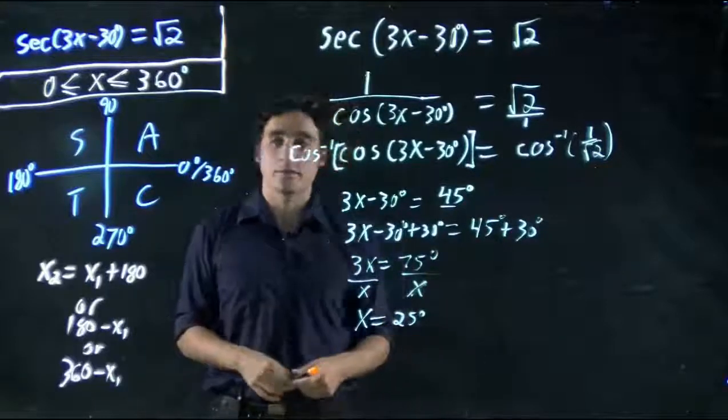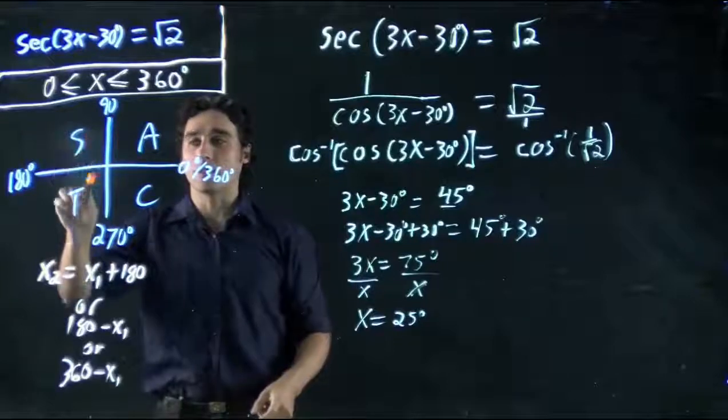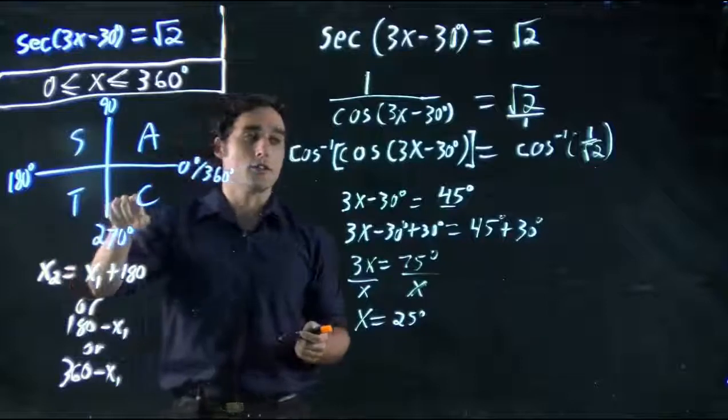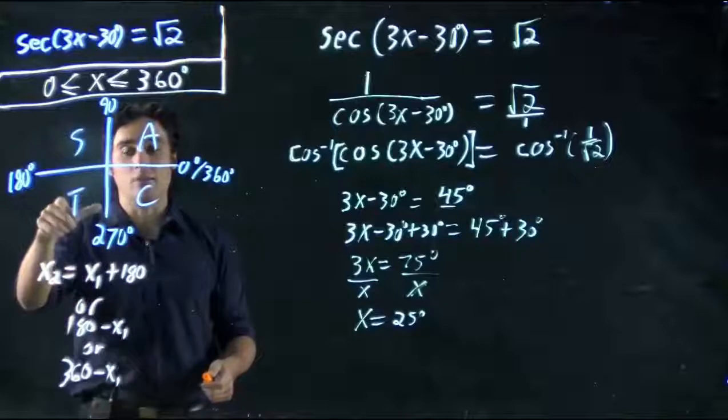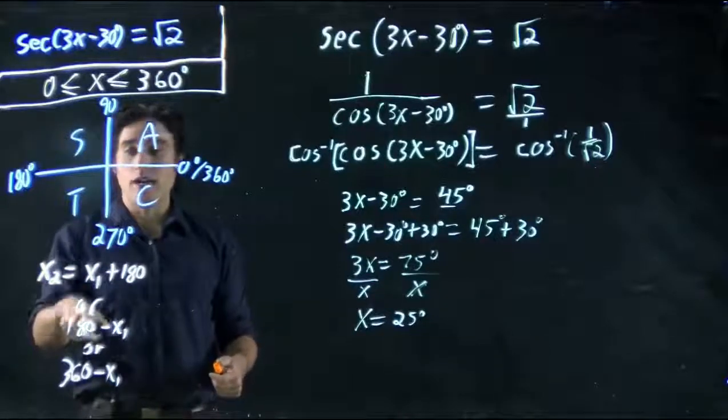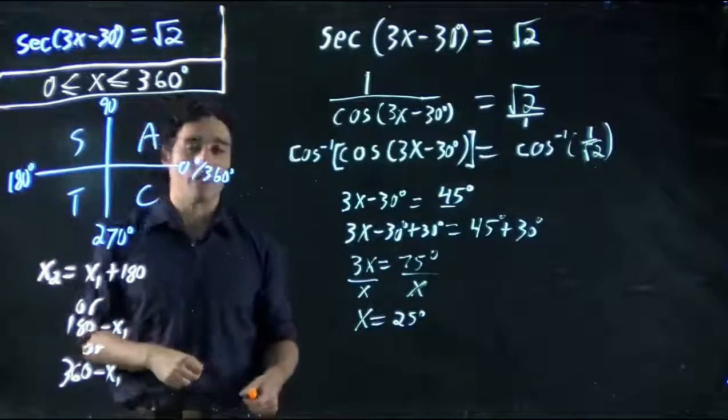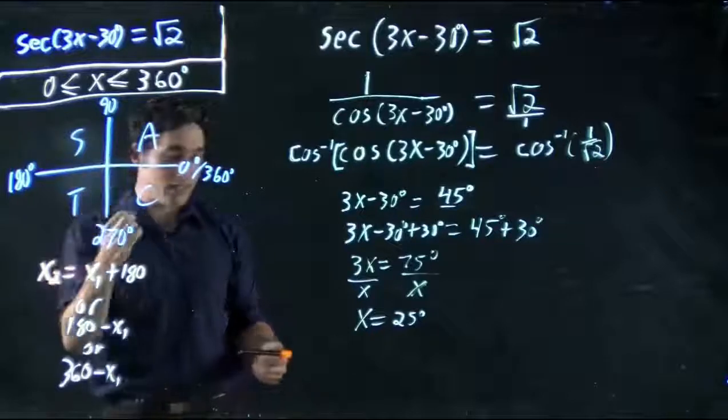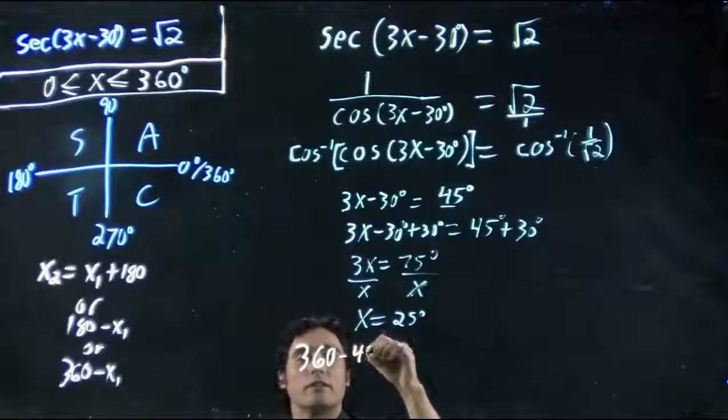45 degrees falls in this region. Positive here. So we want to end up in this quadrant, our other solution. Which of these cases will give that? 45 plus 180, 225, puts us here. This would give us 135, puts us in there. 360 minus 45 though, that's 315. It puts us in the quadrant we want. So we're thinking 360 minus 45.